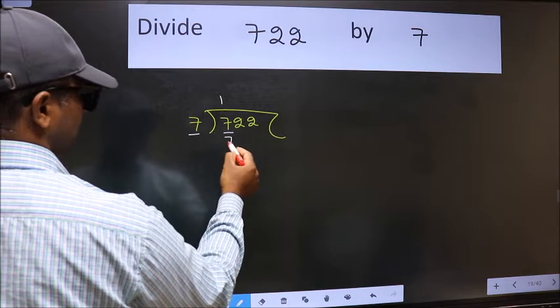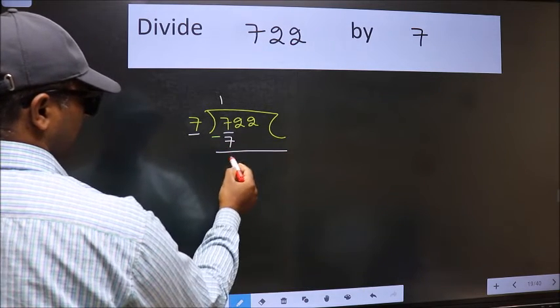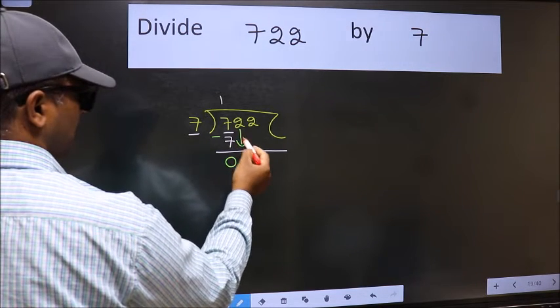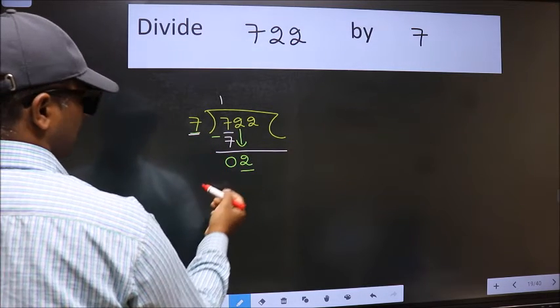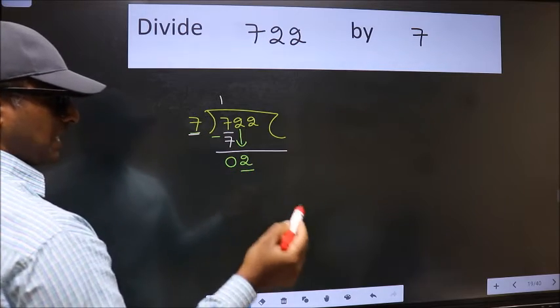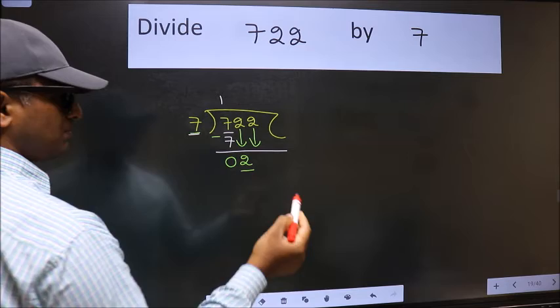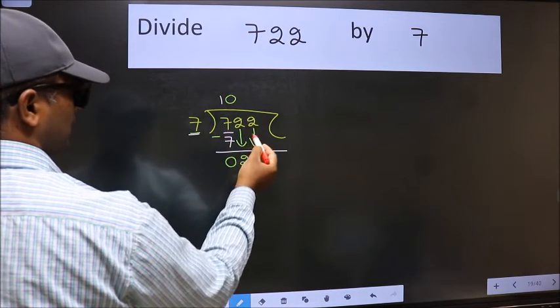After this, bring down the next number, which is 2. Now we have 2 and 7. Two is smaller than 7, so we should bring down the second number. The rule to bring down the second number is we should put zero here, then only we can bring this number down.